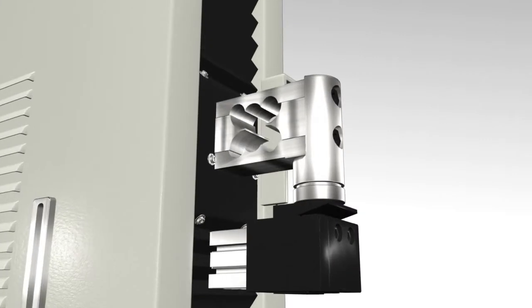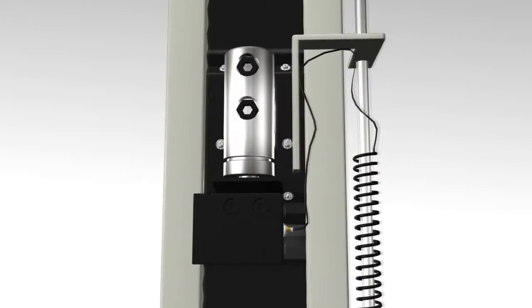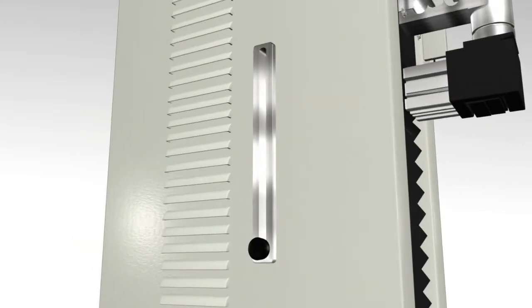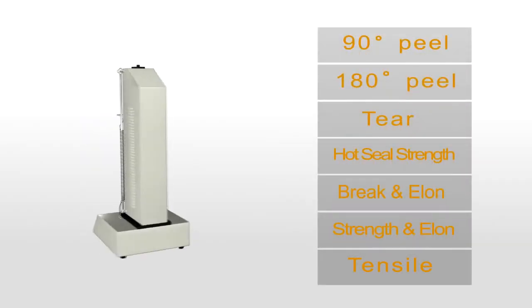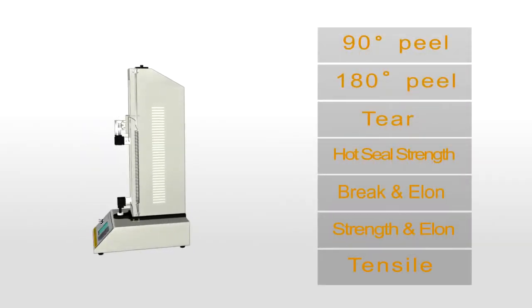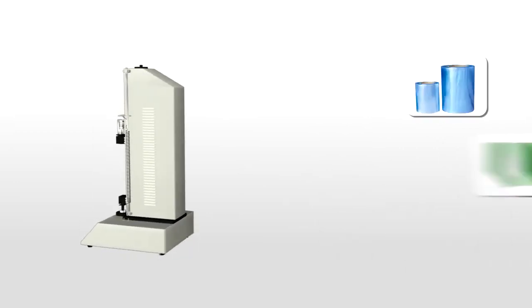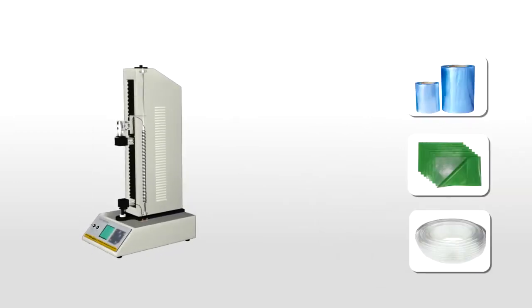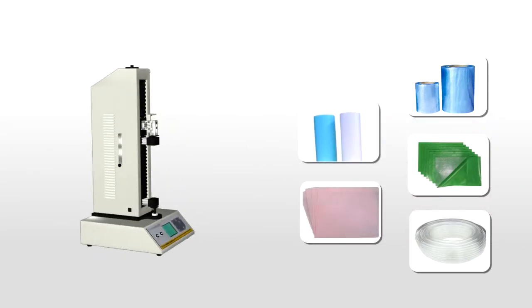XLWM has a high precision load cell and the functions of power failure memory, overload protection, over travel protection, and automatic position reset. It is designed to measure the tensile strength, peel strength, heat seal strength, and tear resistance of plastic films, composite materials, flexible plastic tubes, release paper, non-woven fabrics, and other materials.